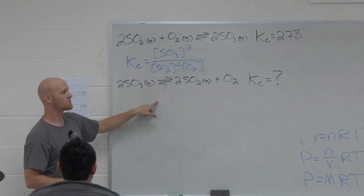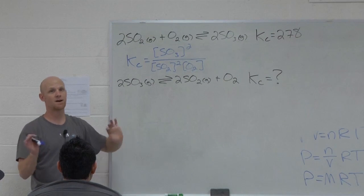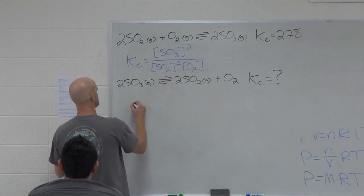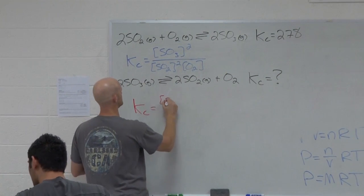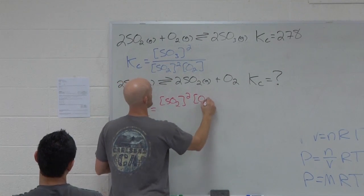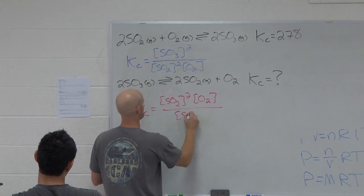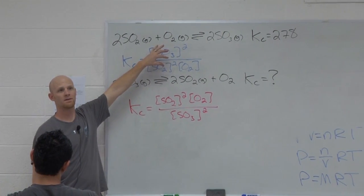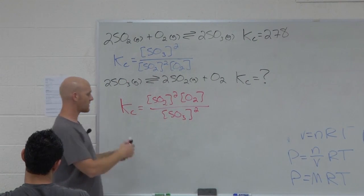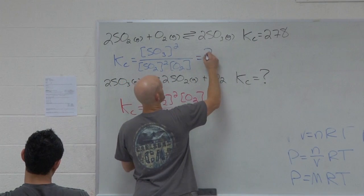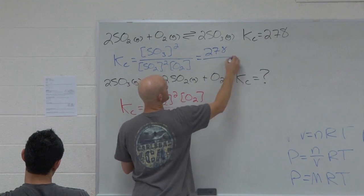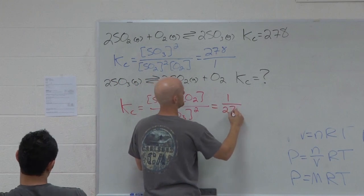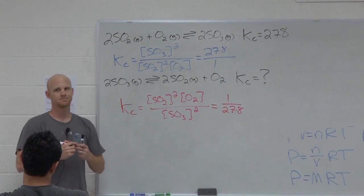But notice, what's the expression for this one? It's SO2 squared times O2 all over SO3 squared. How does this expression relate to the first one? It's inverse. So notice, if this first one is equal to 278, which, awesome, is the same as 278 over 1, then this second one is going to equal 1 over 278. Cool?